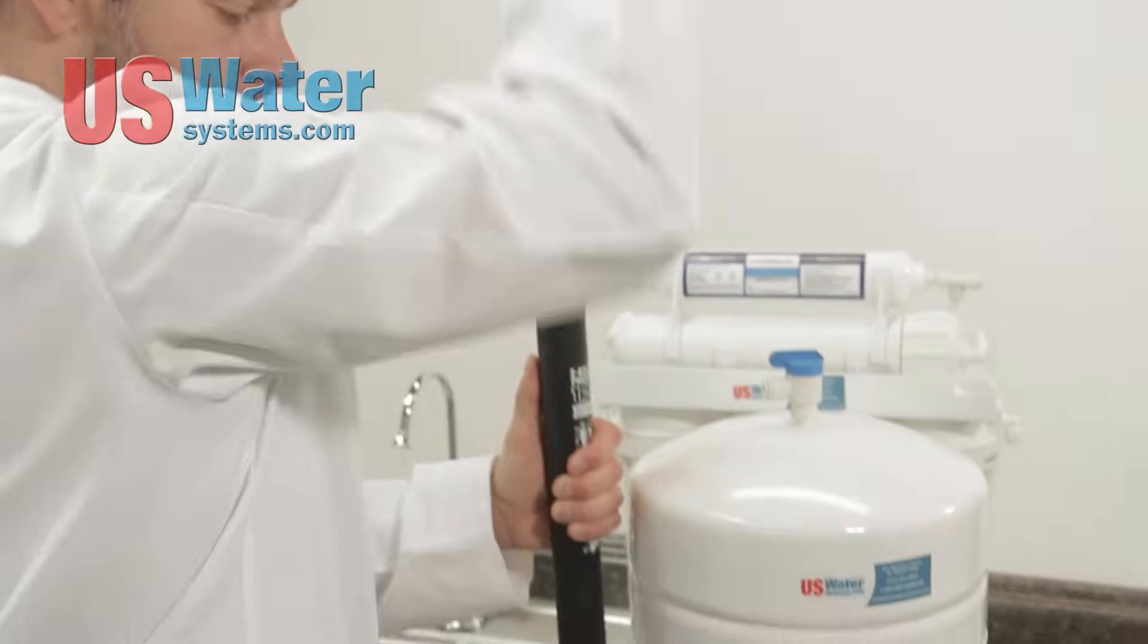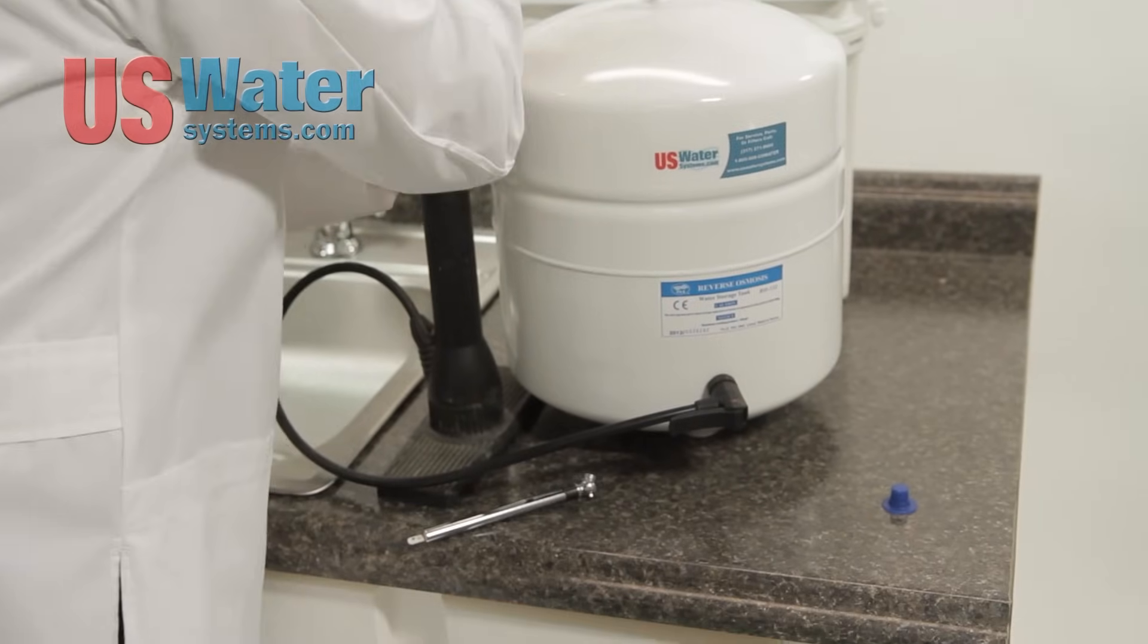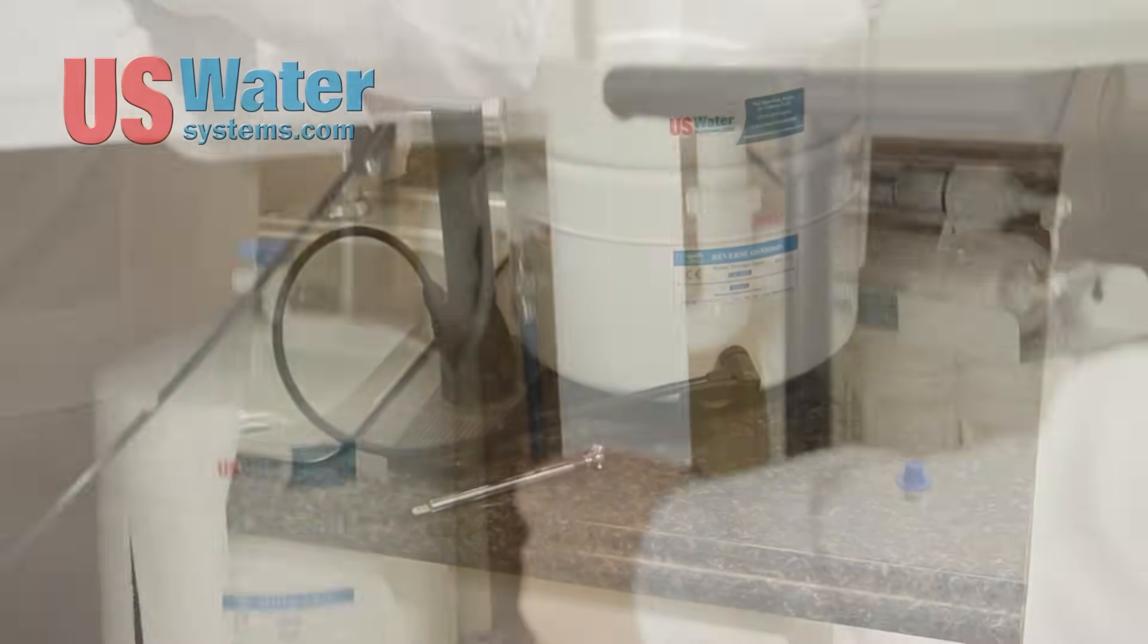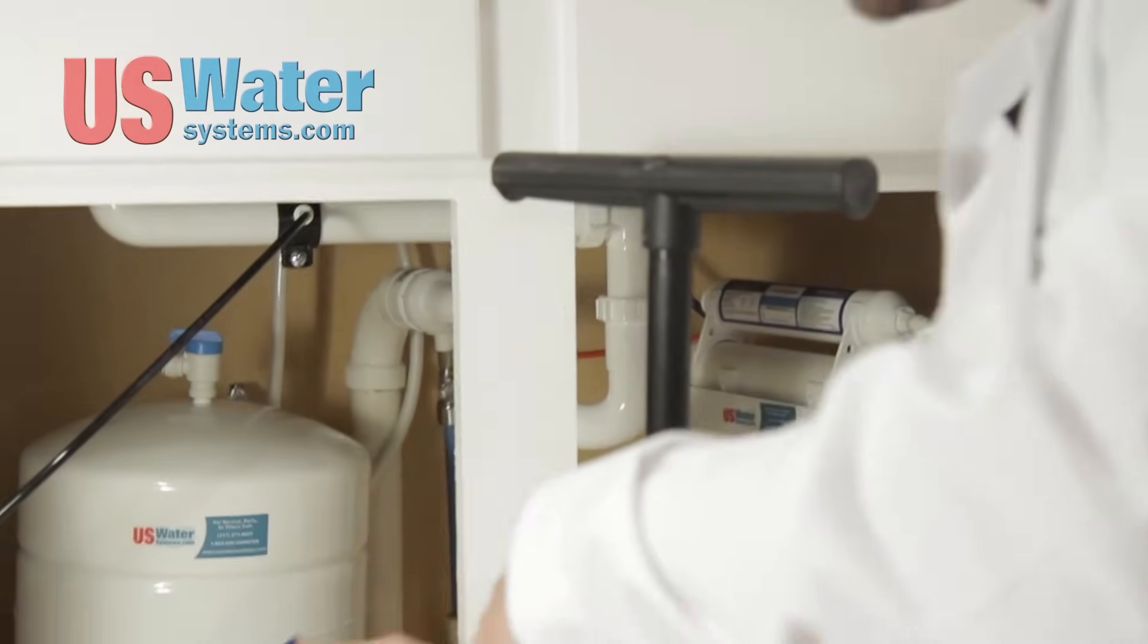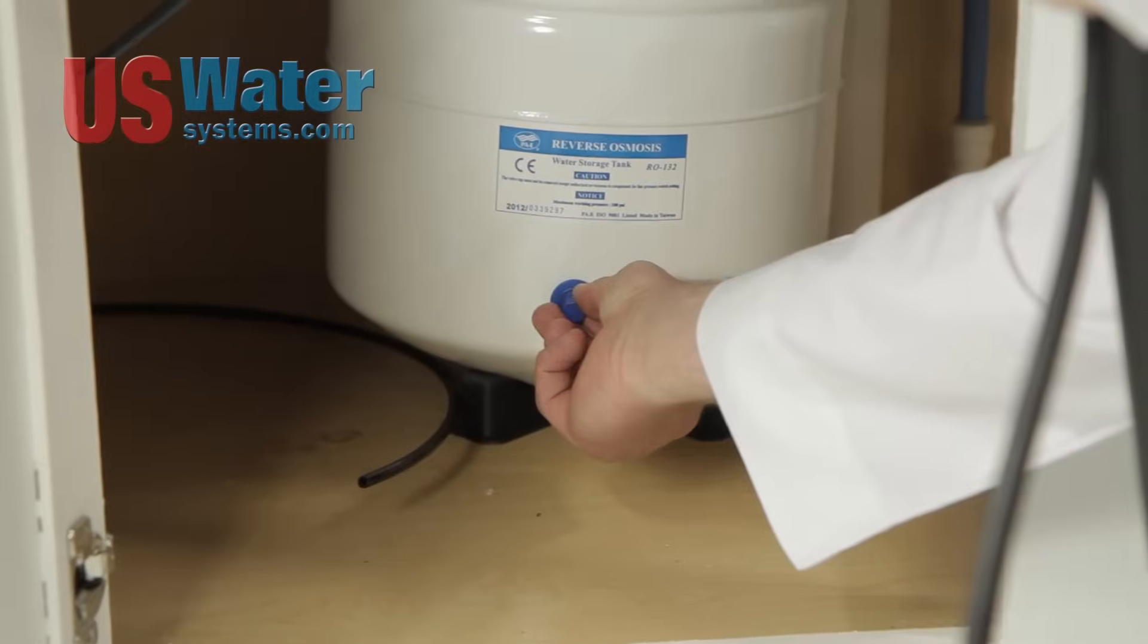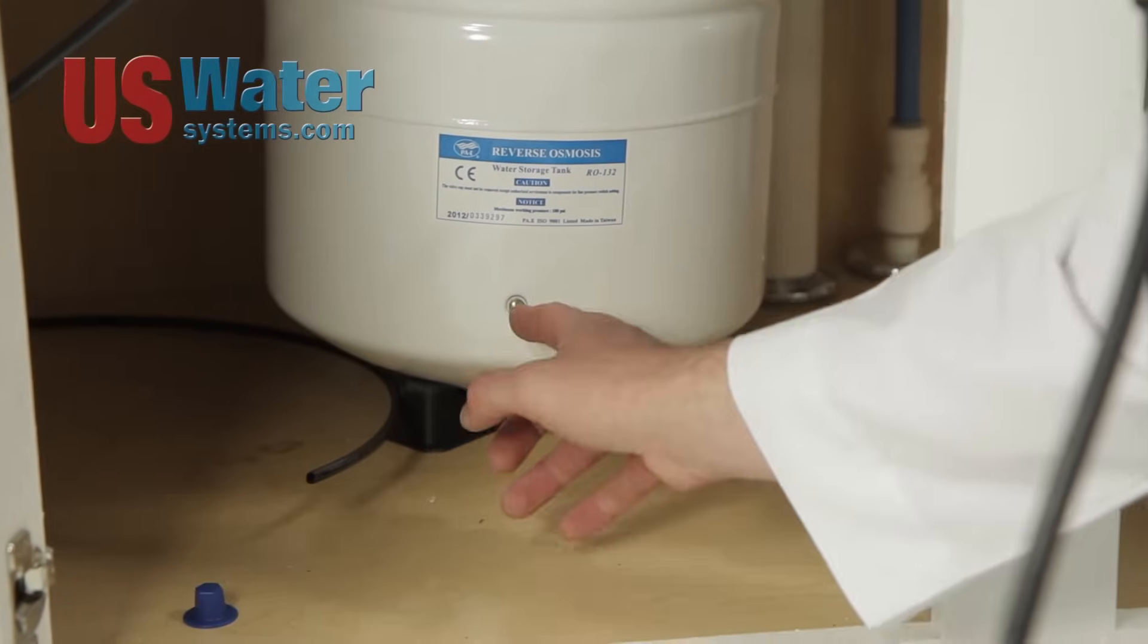At which point you can take your bicycle pump or your air compressor and hook it up to the Schrader valve. Now the Schrader valve typically has a blue cap on top but I've already removed that. So just unscrew it. That'll expose the valve.